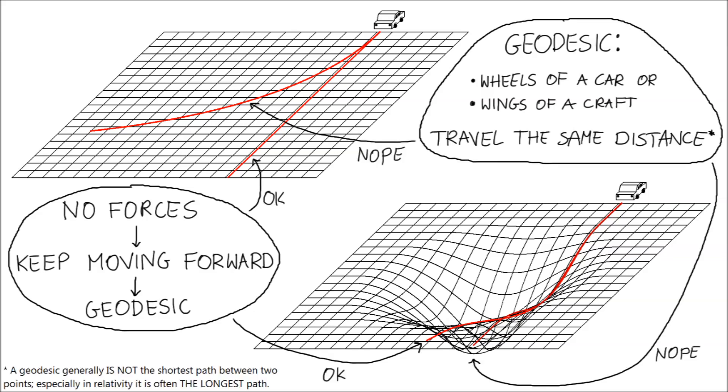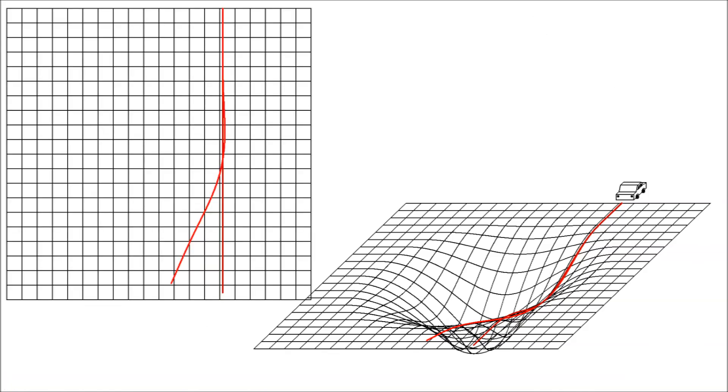Sometimes we cannot nicely visualize curved space and we only have a faraway view. But even then we can still figure out the shape of a geodesic. As the car passes the top of the hill, the actual distance per square on the faraway view is bigger for one wheel than for the other. If the wheels have the same actual speed, the wheel up the slope seems slower than the other wheel, which is why the car seems to turn.